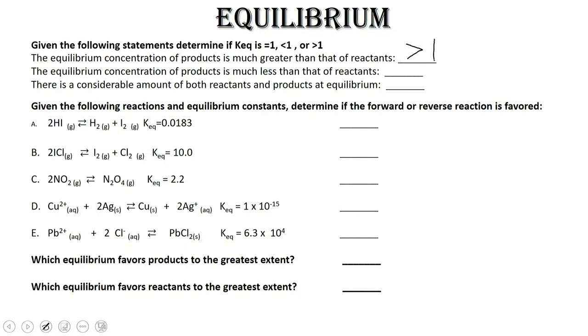The second question asks, the equilibrium concentration of products is much less than that of reactants. Well, if we've got more reactants and there's a larger number in our denominator, then our equilibrium expression is less than 1.